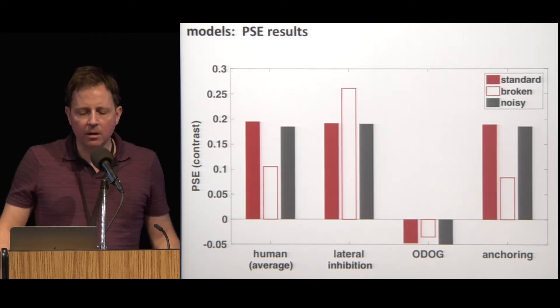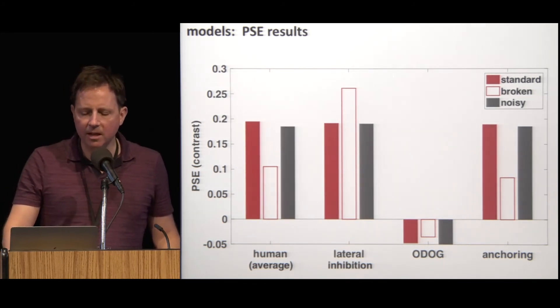Human observers see a strong illusion in the standard and noisy conditions and a weaker illusion in the broken condition. The lateral inhibition model actually has this backwards. It sees a stronger illusion in the broken condition than in the standard and noisy conditions. The ODOG model perceives a very weak illusion in the wrong direction. The test diamond that looks brighter to humans actually looks darker to the ODOG. We were surprised to find that when you put humans and models through the same experiment, it becomes very clear that these low-level models are inadequate. The anchoring model, though, perceives approximately the same pattern of illusions as human observers do.